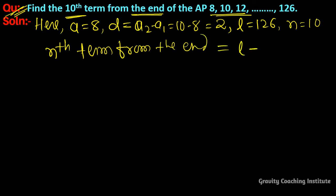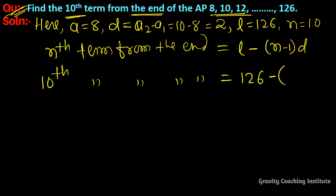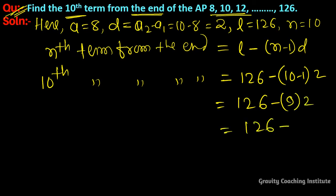We know the nth term from the end of an AP is equal to l - (n-1) × d. So the 10th term from the end = 126 - (10-1) × 2 = 126 - 9 × 2 = 126 - 18 = 108. Answer: 108.